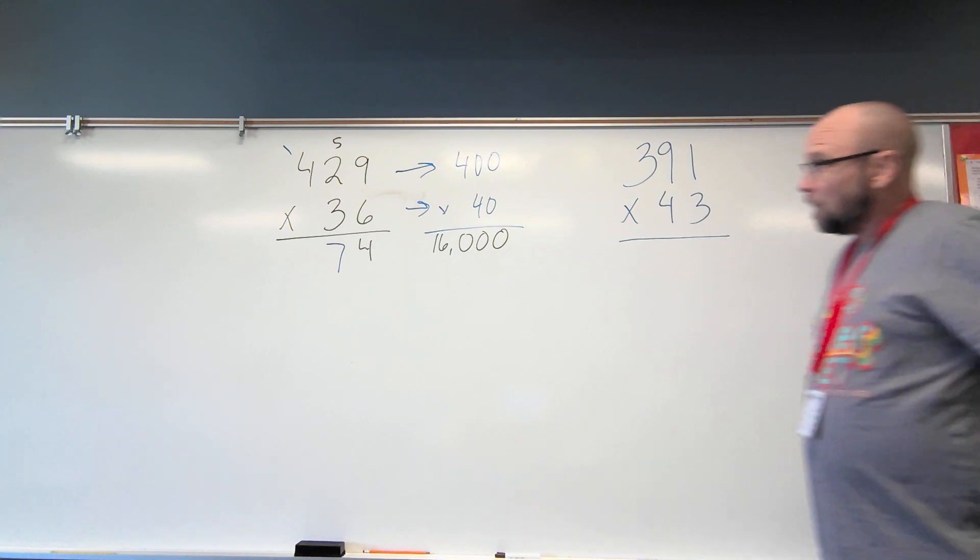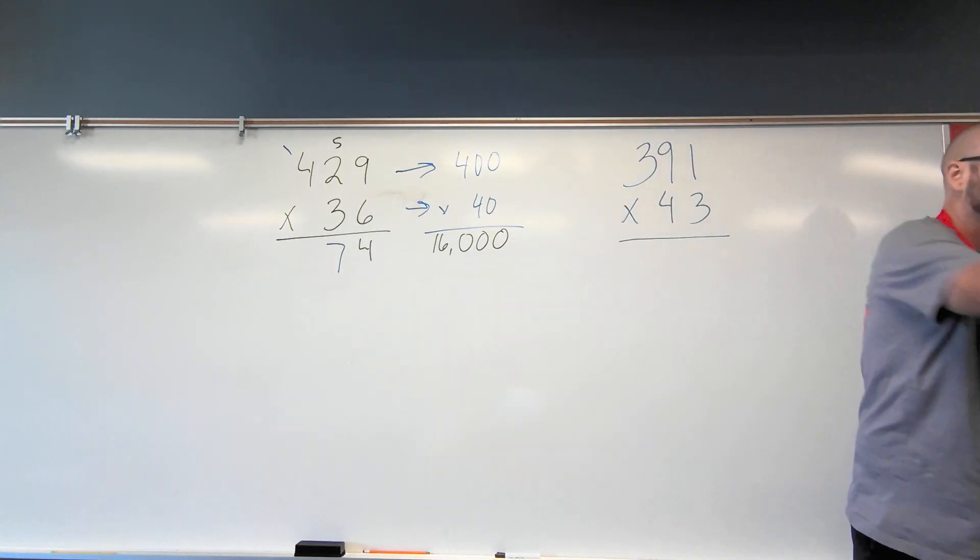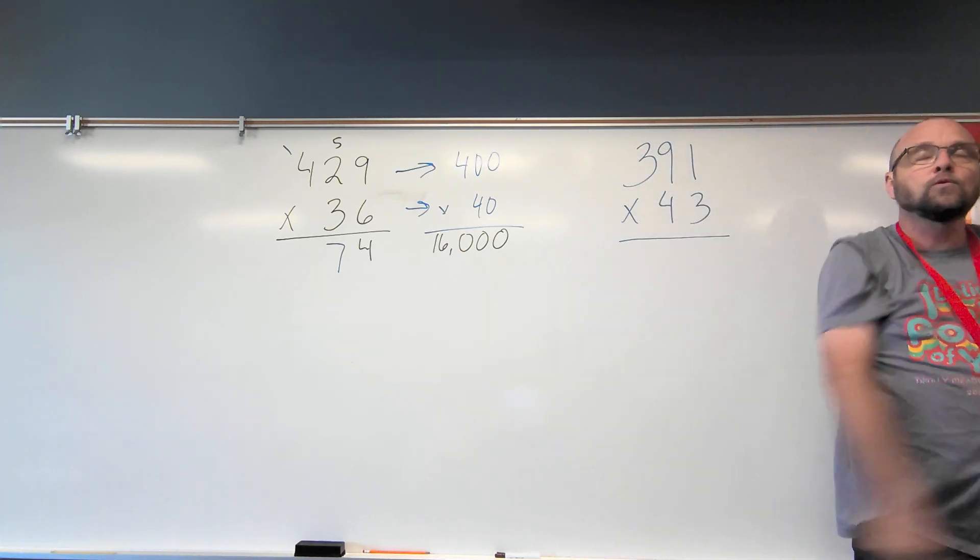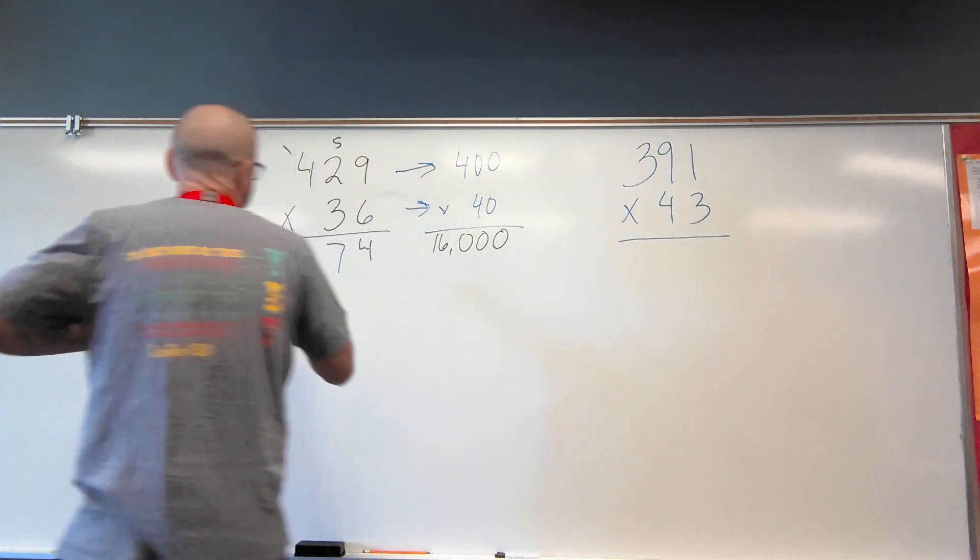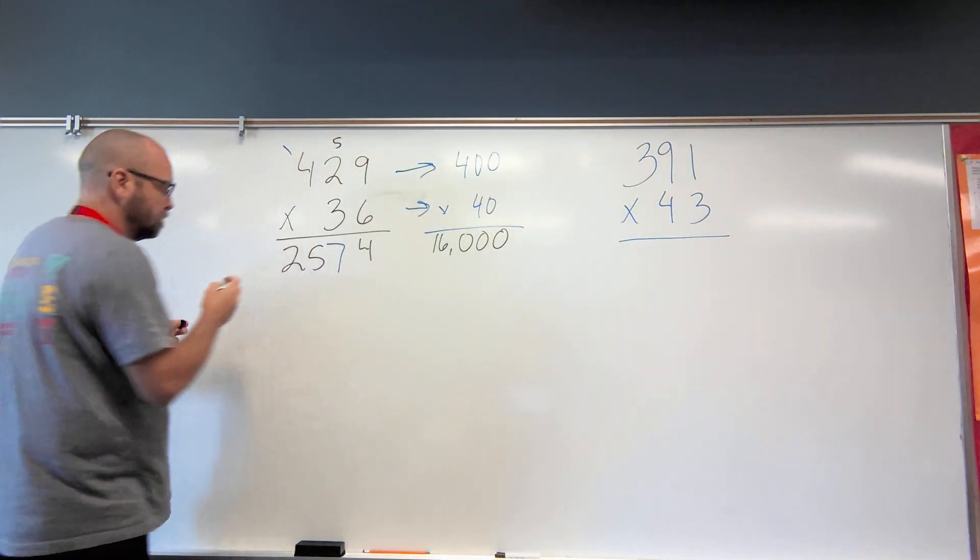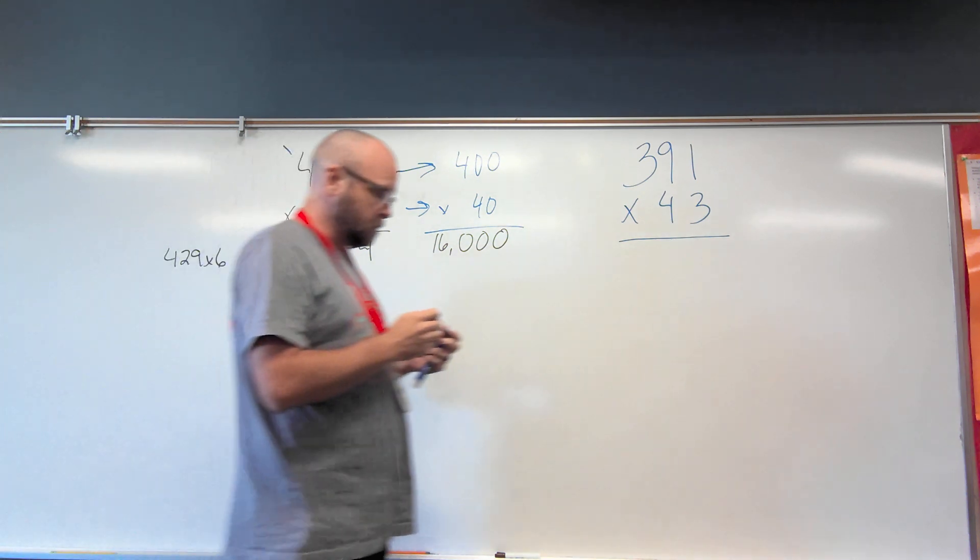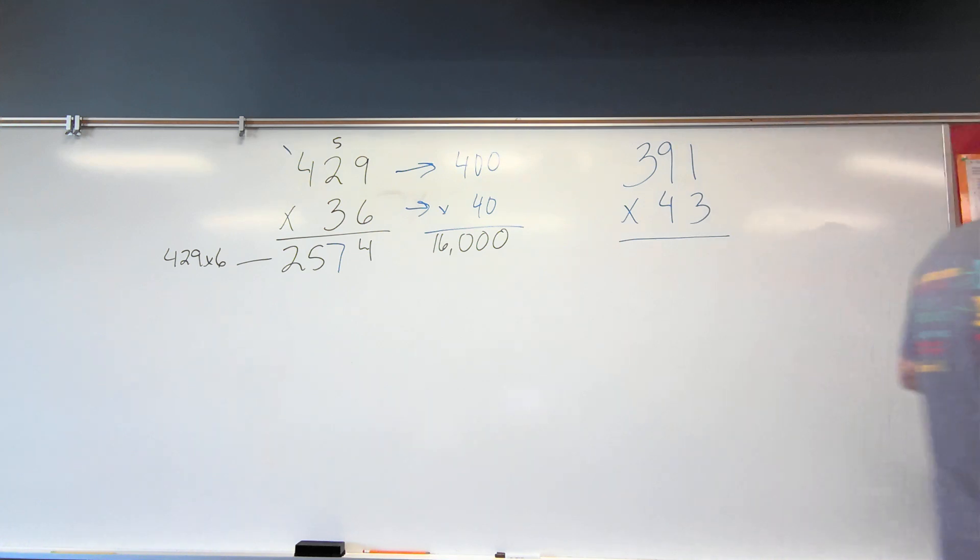Now I have six ones times four hundreds. So what's six times four? 24. Plus one more? 25. So what you got here was 429 times 6. So if you can multiply by one digit, it's easy peasy, raw chicken squeezy.